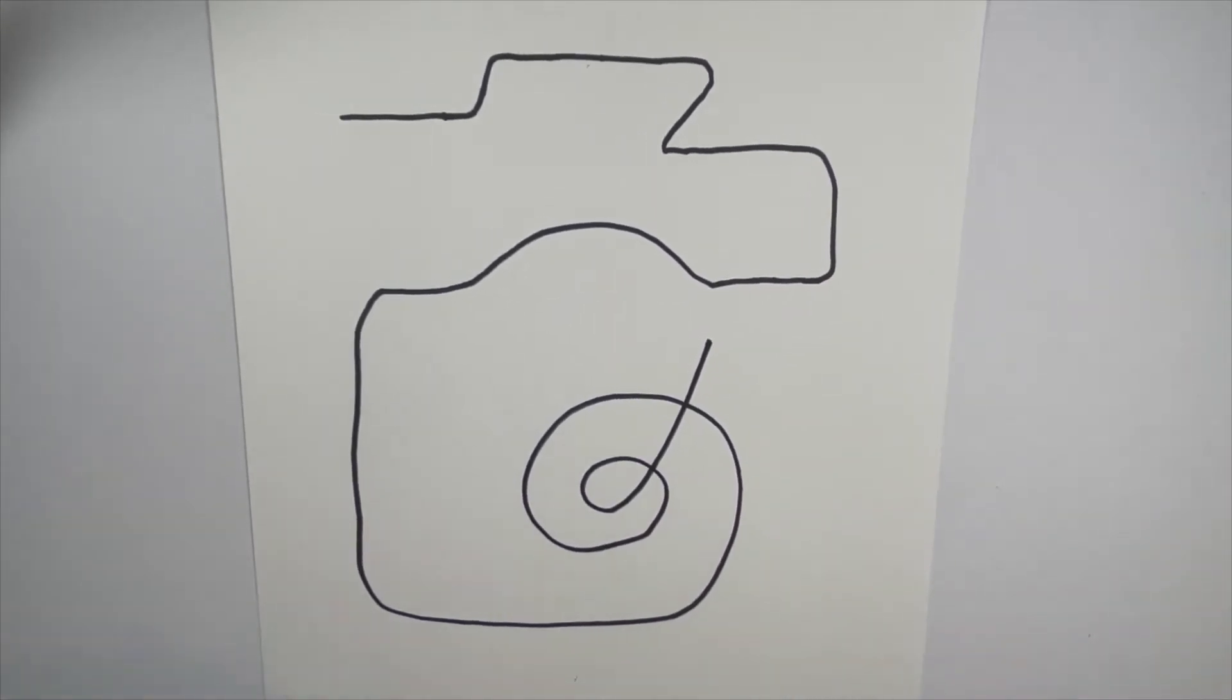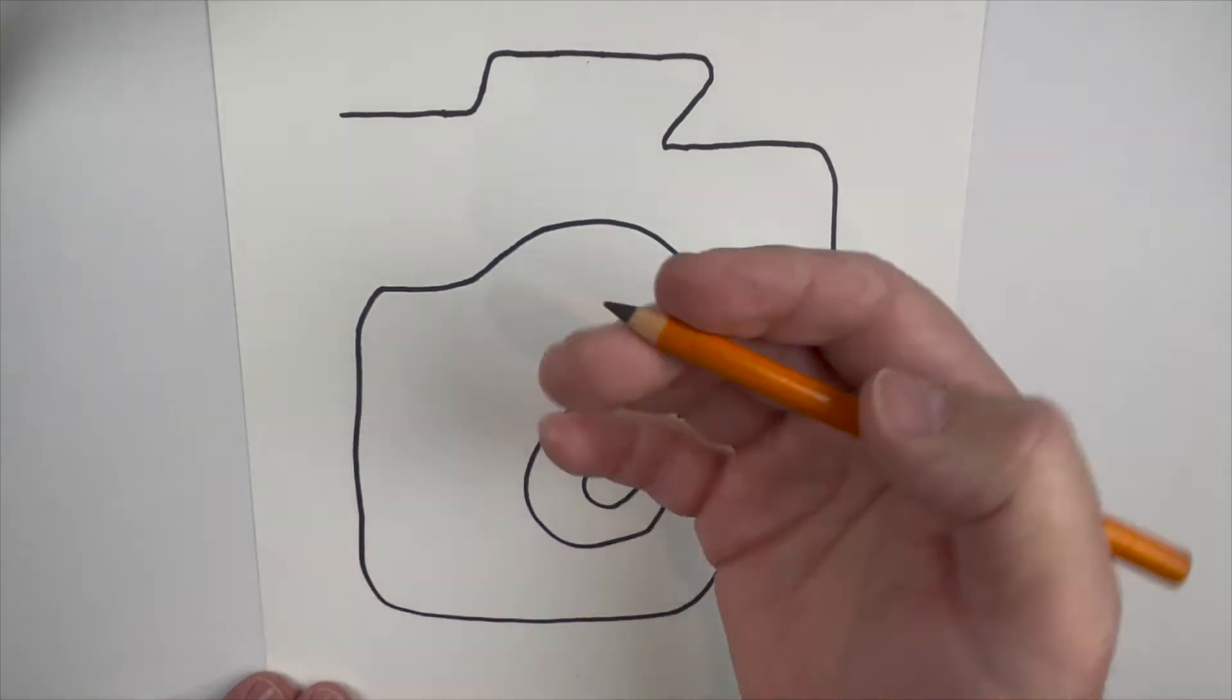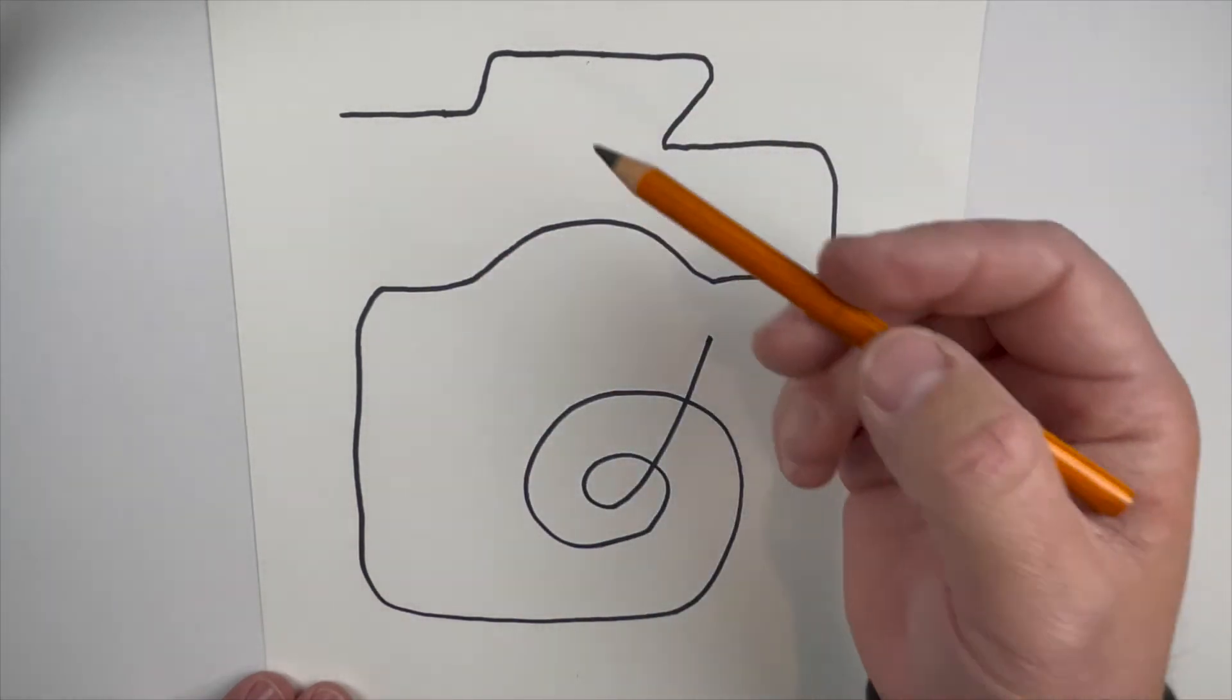So this is the basic drawing. I don't know if you want to call it a drawing, call it a scribble, call it whatever you want. But here's the next thing we're gonna do. I'm gonna show you how to give this depth, how to make it look like it's literally coming off the paper.